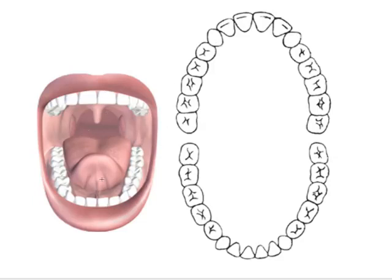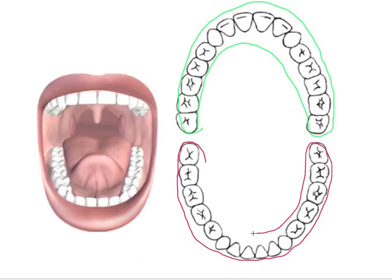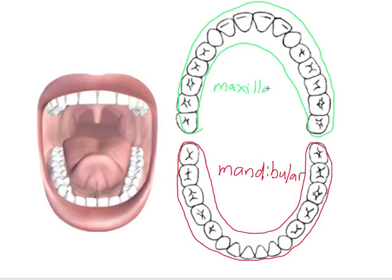Imagine this mouth stretching as far open as possible and you'll get something like this image on the right. The upper teeth are connected to the maxilla or the upper jawbone, so we call this the maxillary arch, whereas the lower teeth are connected to the lower jawbone called the mandible, and so this collection of teeth is referred to as the mandibular arch.